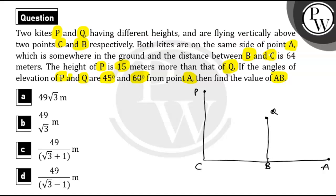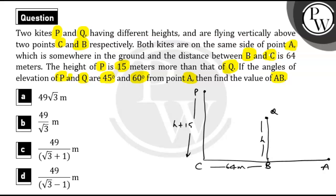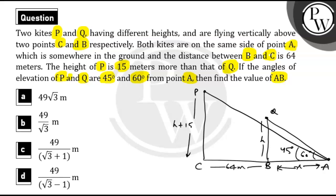Moving ahead, the distance BC is given as 64 meters. The height of P is 15 meters more than that of Q. So if we let the height of Q be H, then the height of P will be H plus 15. The angles of elevation of P and Q from point A are 45 degrees and 60 degrees respectively — so the angle for Q is 60 degrees and the angle for P is 45 degrees. We also let the distance AB equal to X.